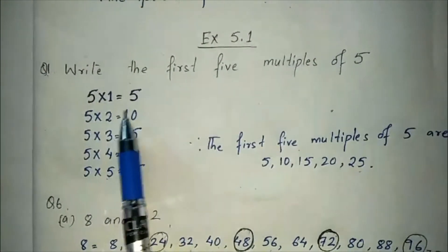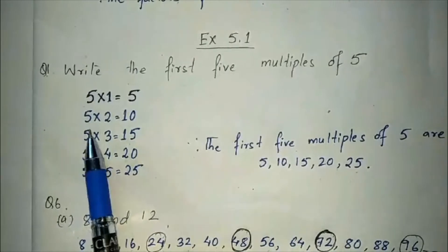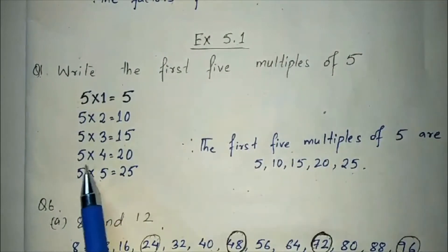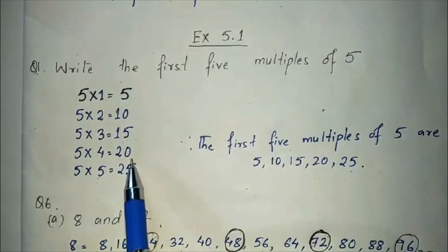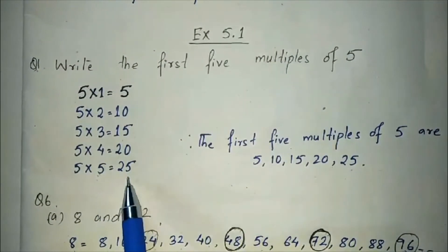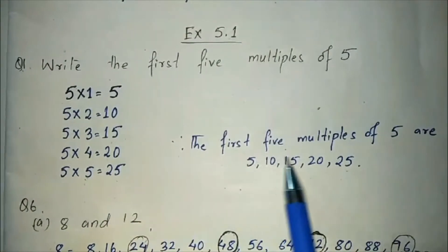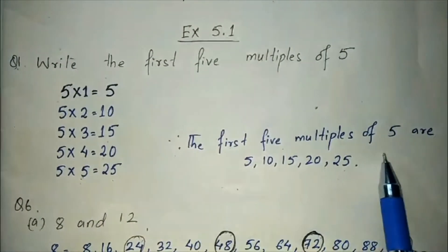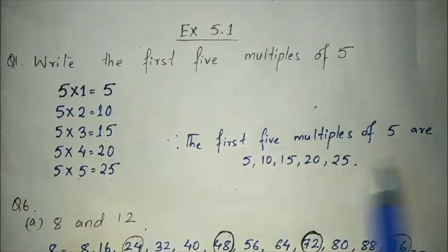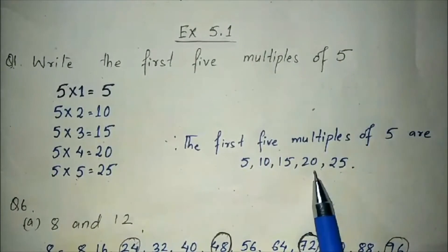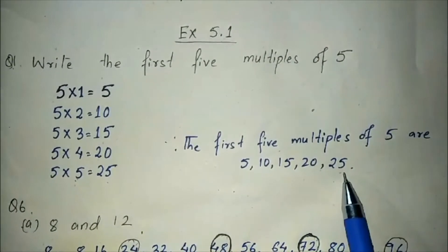5×1=5, 5×2=10, 5×3=15, 5×4=20, 5×5=25. So the first 5 multiples of 5 are 5, 10, 15, 20, and 25.